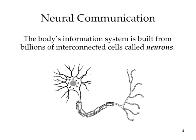The first slide shows a picture of a neuron. The body's information system is built from billions of interconnected cells called neurons. When we take the quiz on Wednesday, you will have to identify and label the parts of the neuron. You'll need to identify the cell body, the nucleus in the center, the dendrites, the axon — which is this long branching extension — the terminal buds where the neurotransmitters are stored, and the myelin sheath, the casing outside of the axon.